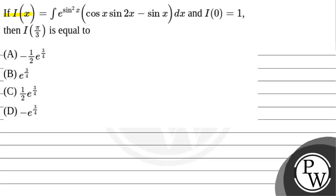Hello watchmen. Let us read this question. If I(x) equals the integral of e to the power sin²x · cosx · (sin2x − sinx) dx, and I(0) equals 1, then I(π/3) is equal to: option A: −1/2 · e^(3/4), option B: e^(3/4), option C: 1/2 · e^(3/4), or option D: −e^(3/4).